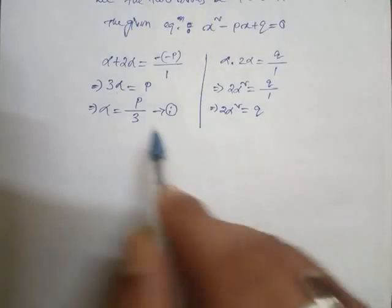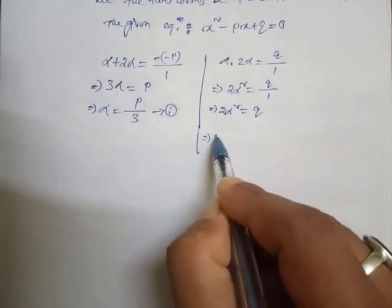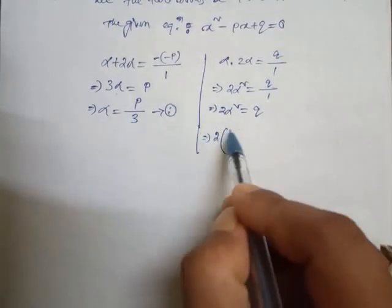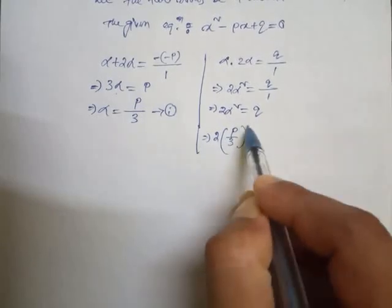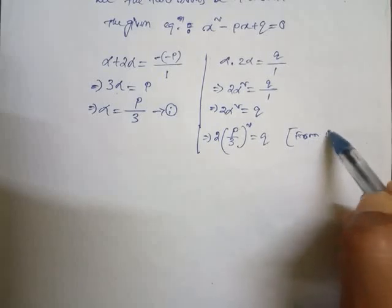Student, now look. In place of alpha squared, I will just put down the value of alpha here. So 2 into, in place of alpha I will put down here p by 3 squared equal to q. And this is from equation 1.